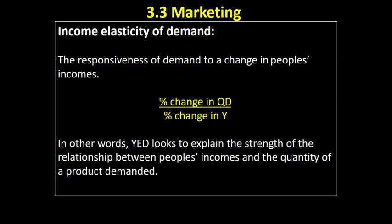Remember there are three different types of goods. If there's a negative relationship between income and demand — as incomes go up, demand goes down, or vice versa — these are known as inferior goods. Goods with a positive but weak relationship, where demand doesn't rise much as incomes rise, are necessity goods. Luxury goods respond strongly to changes in income: a 10% change in income might lead to a 20% change in demand.